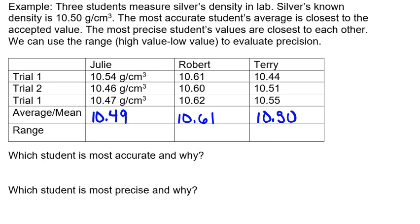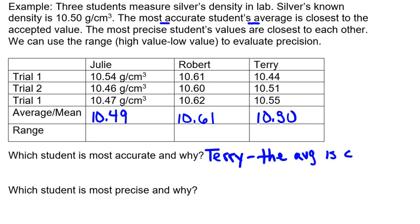Since accuracy and average both start with A — notice those two A's go together — the most accurate student is Terry, because her average is closest to the accepted value.